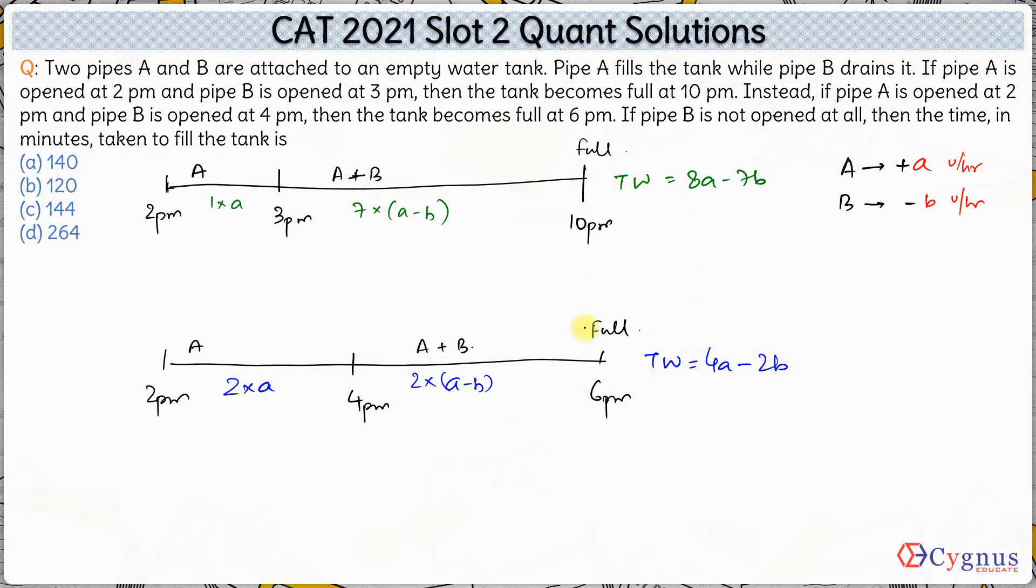Now since we are talking about the same tank in both these cases, that means the work done in both these cases will be same. Hence 8A minus 7B is same as 4A minus 2B. So from here we have 4A is equal to 5B. So 4A is equal to 5B, this is what we have.